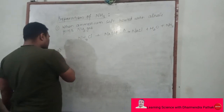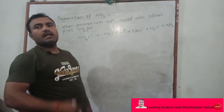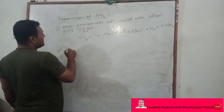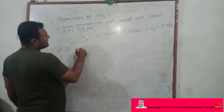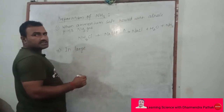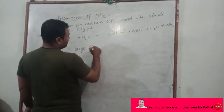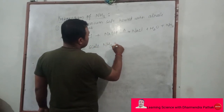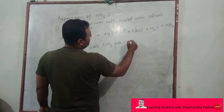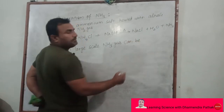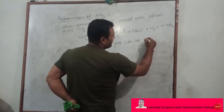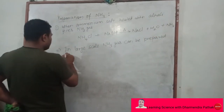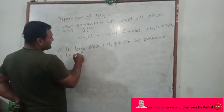The second method of preparation is on a large scale when we need ammonia — this is called industrial preparation. Ammonia gas can be prepared by Haber's process.